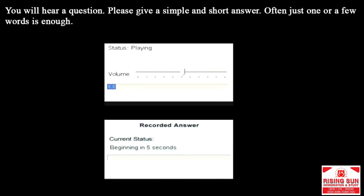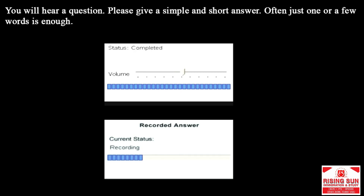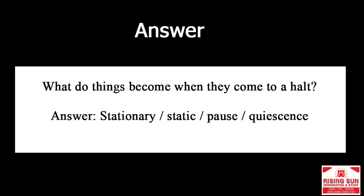What do things become when they come to a halt? Answer: stationary, static, pause, quiescence.